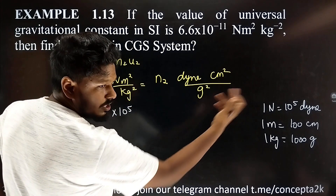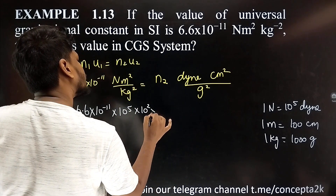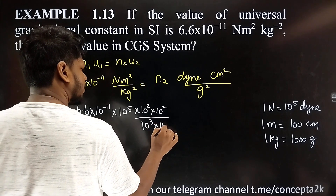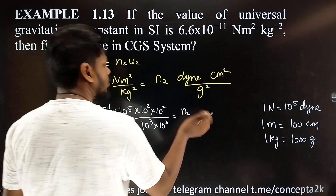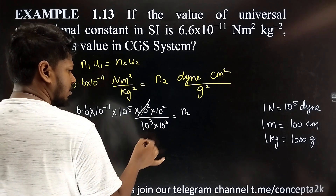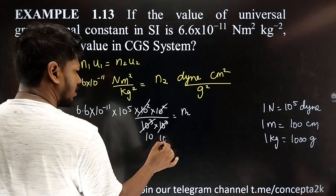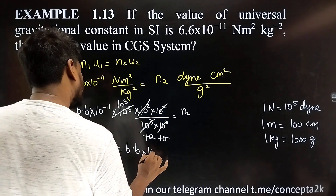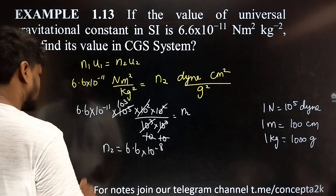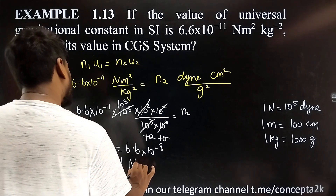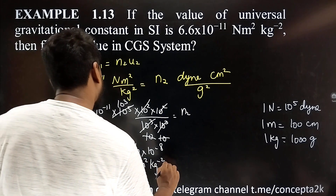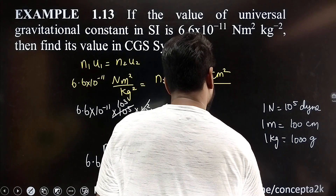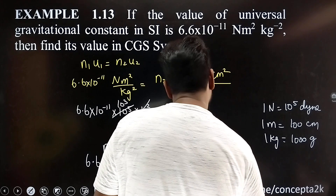10 power 5, for meter to centimeter it is 10 power 2, so meter squared gives 10 power 2 into 10 power 2. For kg to gram it is 10 power 3, so kg squared gives 10 power 3 into 10 power 3. After substituting all units, we get 6.6 into 10 power minus 8 dyne centimeter squared per gram squared.